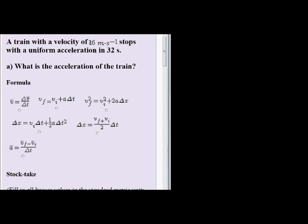They tell us that a train has a velocity of 16 m per second. What velocity? Initial or final? That is definitely the initial velocity of 16 m per second. Then it says it stops with a uniform acceleration. So it stops means that its final velocity is zero. And it stops with a uniform acceleration, that just tells us that the acceleration is constant, in 32 seconds. So they give us delta t is equal to 32 seconds.